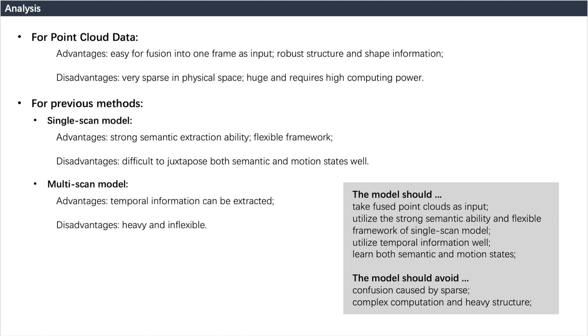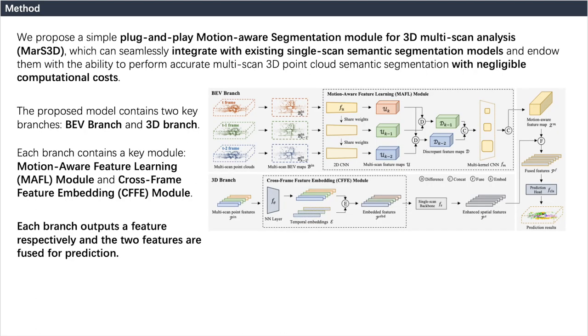At the same time, methods designed for multi-scan tasks tend to have relatively heavy structures. In order to avoid the shortcomings caused by the above problems, we propose a simple plug-and-play motion-aware segmentation module for 3D multi-scan analysis which can seamlessly integrate with existing single-scan semantic segmentation models, and endow them with the ability to perform accurate multi-scan 3D point cloud semantic segmentation with negligible computational costs.